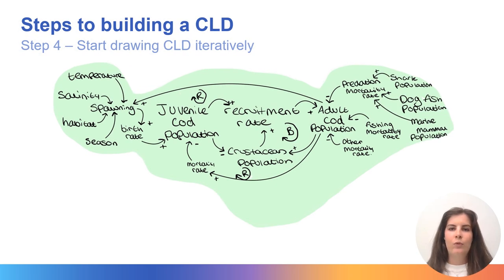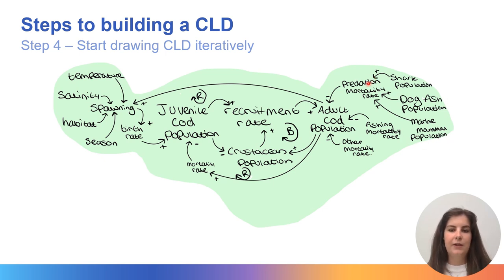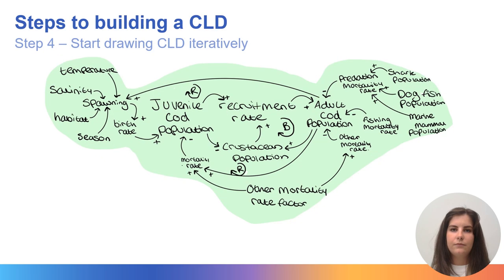This stage adds factors that influence the predation rate — specifically populations of predators that eat cod fish. Adult cod fish are eaten by marine mammals such as seals, sharks and dogfish. As the predation population increases, the predation mortality rate increases, and as the predation mortality rate increases, the cod population decreases. The final stage of the environmental sustainability pillar is simply adding the other mortality rate factor — natural deaths such as old age for our cod fish.